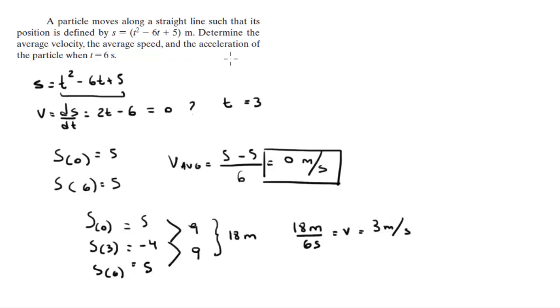Now, I want you to find the acceleration when t equals 6. You already have the velocity. If the velocity is 2t minus 6, you know that the acceleration is the derivative of the velocity with respect to time, which comes out to be 2 meters per second squared.